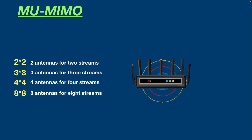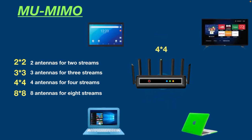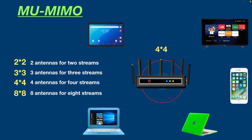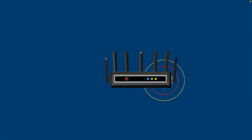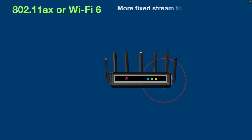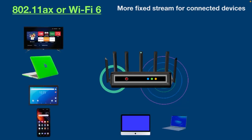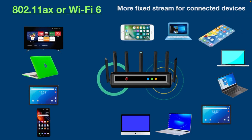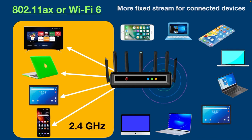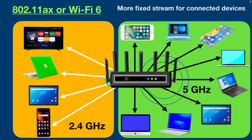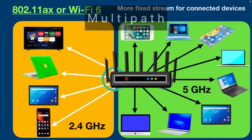The same goes for 4x4 and 8x8. But it doesn't mean you cannot add more devices — for instance, if you are using a 4x4 router at your home and you want to add a fifth device, the router divides the stream and shares it with the additional device. With new technology such as 802.11ax or Wi-Fi 6, routers have even more fixed streams for connected devices. Practically speaking, some new Wi-Fi 6 routers even support 12 streams — as you can see, this router supports 12 devices: 4 on the 2.4 GHz band and 8 on the 5 GHz band. Multi-User MIMO also takes advantage of multipath and beamforming techniques, which were explained in the previous video.